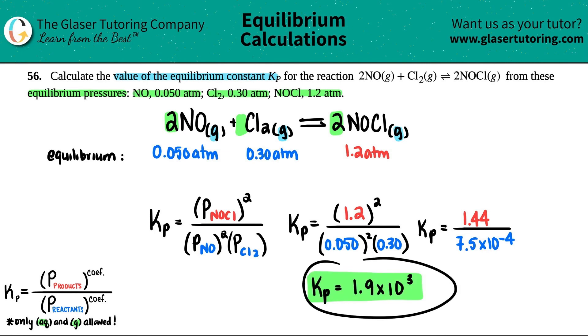And remember, a Kp that is way larger than 1 means that at equilibrium, you should have mostly products. And look at these numbers. I got 1.2 versus 0.05 and 0.3. So, the meaning kind of checks out.